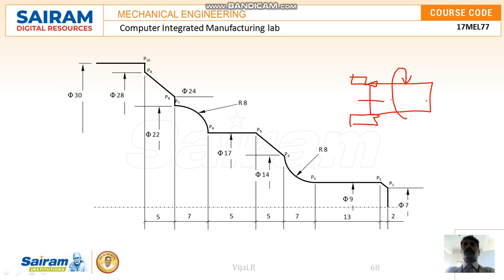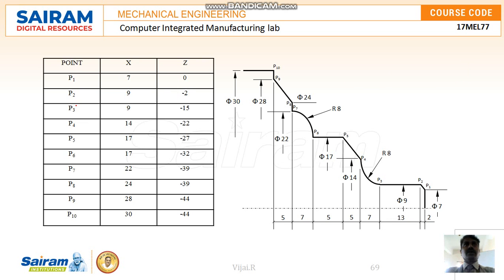This is a cylindrical raw material. We bring a sharp edge tool and use it to remove material from this area. Finally, we get the required shape — this entire area is to be removed. For that, we have to define coordinate points. Imagine point 1, point 2, and so on — at each end we are making coordinate points.